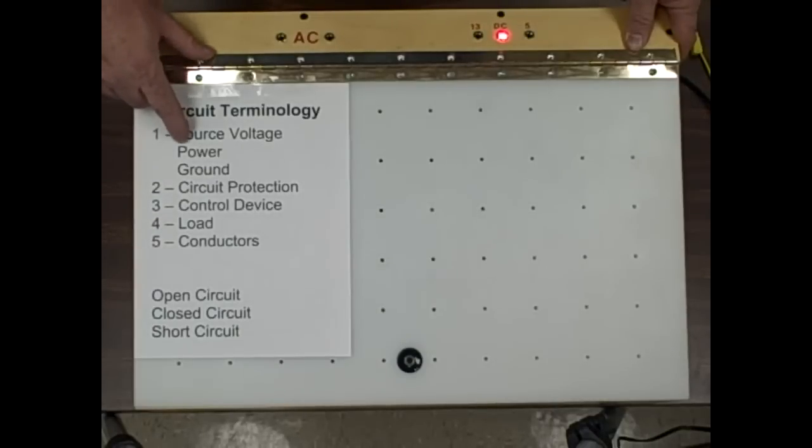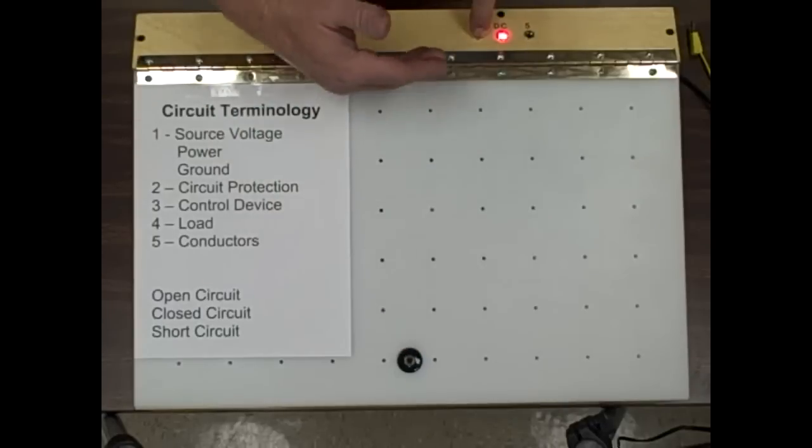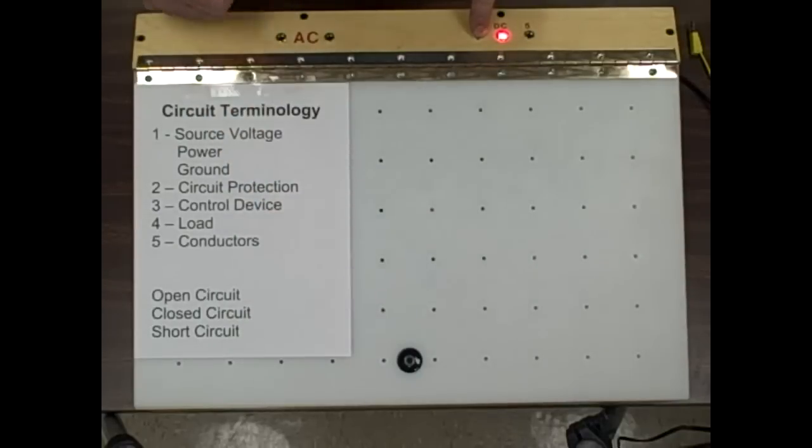You need a source voltage which will be a power and a ground. There's a 13 volt DC tap here and a ground tap down here. Now in this case this trainer board has the power at the top and the ground at the bottom to somewhat mimic a wiring diagram.